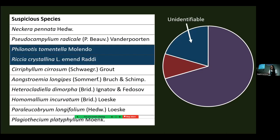Two specimens were unidentifiable. Riccia crystallina is a liverwort that has been taxonomically split, and a lot of these specimens were collected before that split happened. Nobody really knows what's going on with those, so that's beyond consideration for now.